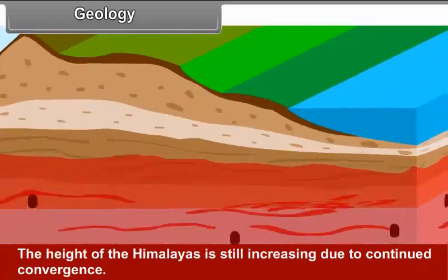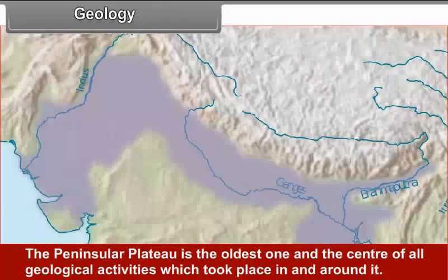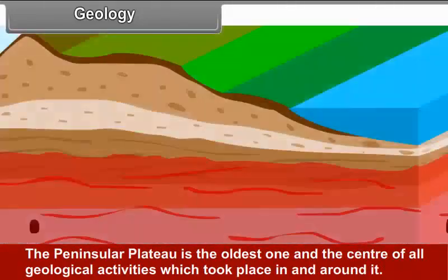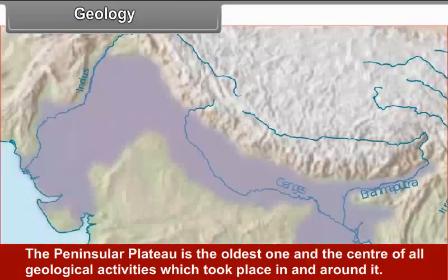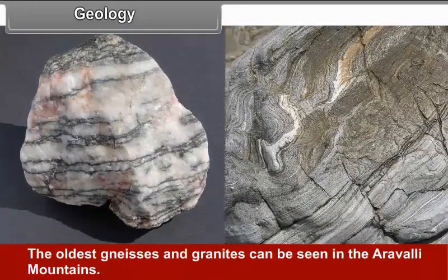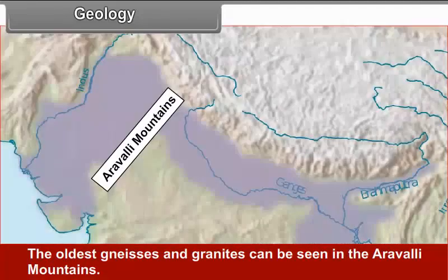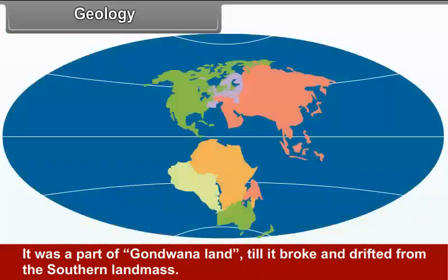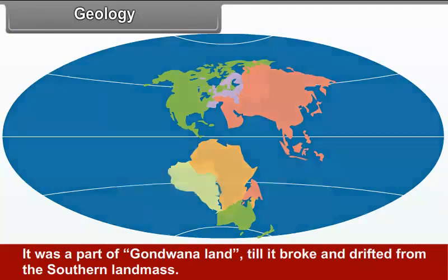The Andaman and Nicobar Islands are believed to have been formed along with the Himalayas by volcanic activity. Besides geological formations, a number of processes such as weathering, erosion and deposition have created and modified the relief to its present form.